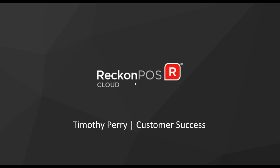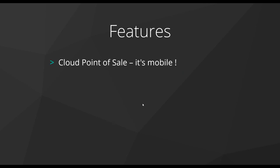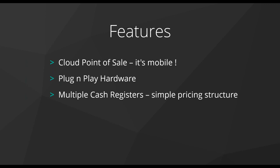Let's jump right into it. To begin with, let's talk about some of the key features of Reckon Cloud POS. First and foremost, it is mobile — as the name suggests it's cloud software, which means you can use it on a desktop, a laptop, or even a tablet. It also supports plug-and-play hardware, so if you've got a USB barcode reader, scanner, receipt printer, or cash drawer, if it's compatible with Windows 10 you can simply just plug and play.